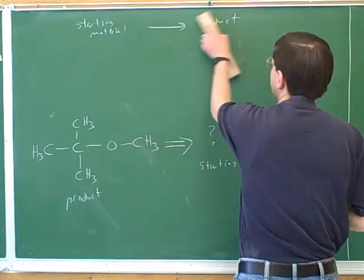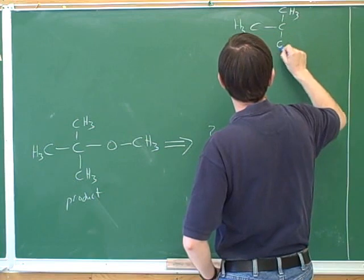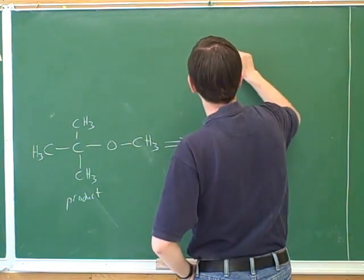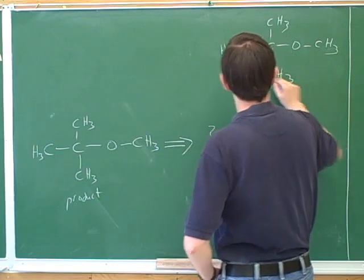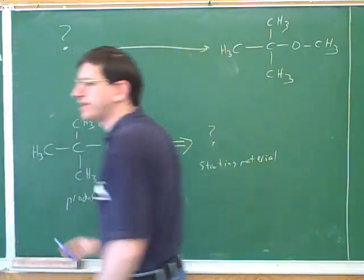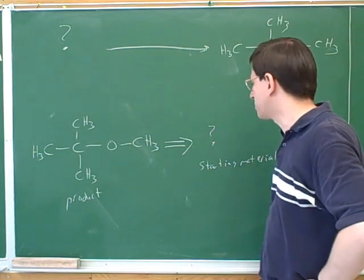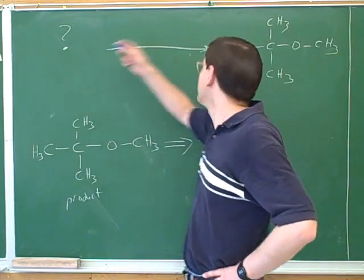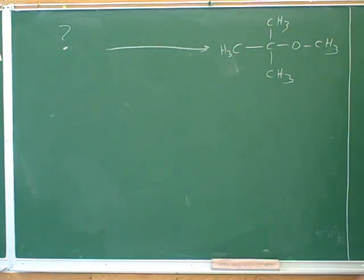I find retrosynthesis arrows very confusing because we've been spending all this time with starting materials on the left and products on the right. So whenever I'm doing a retrosynthesis problem, I always rewrite the problem with a normal arrow — I'd encourage you to do that as well. For a beginning student, it's better to avoid these arrows. So if this was the question, I would rewrite the problem with the product on the right-hand side of a normal arrow. Now we can see what they're asking: what are the starting materials that would lead to this product?